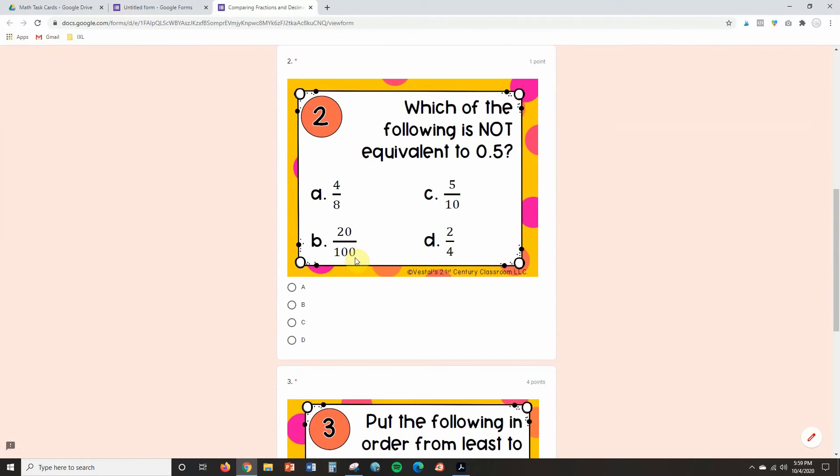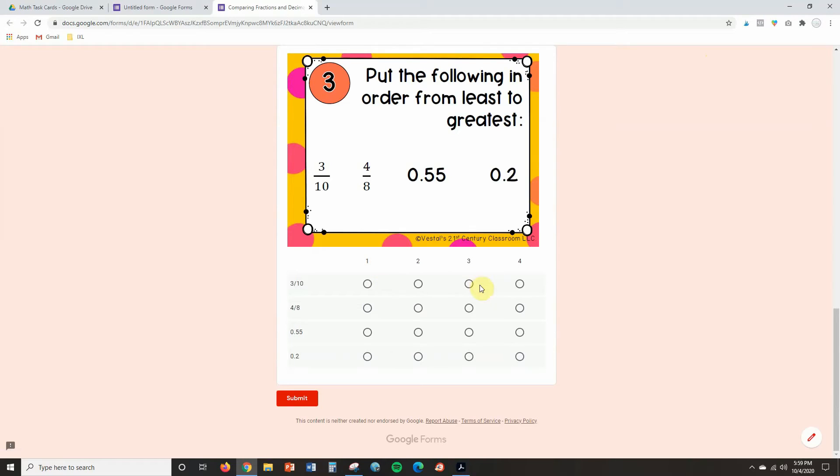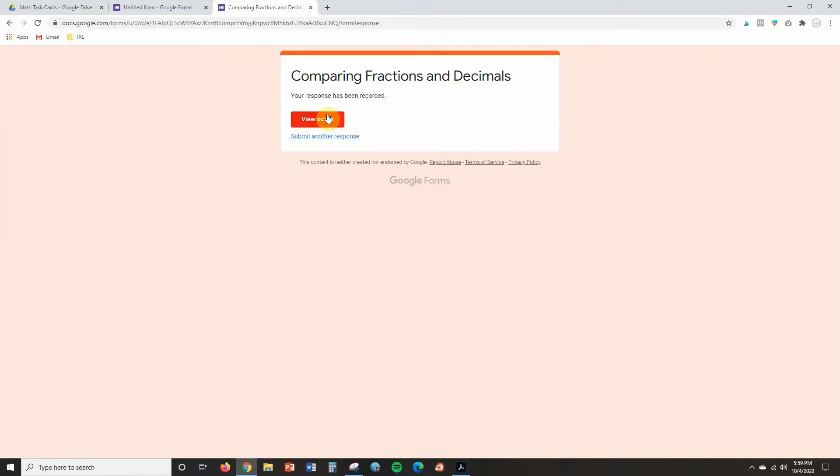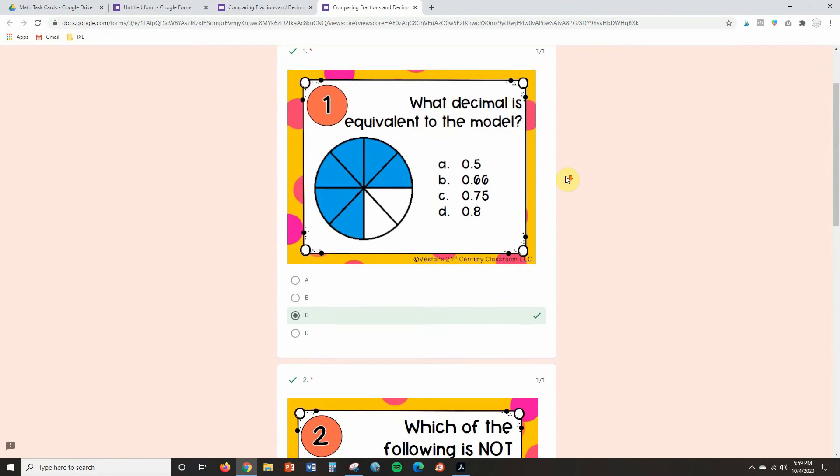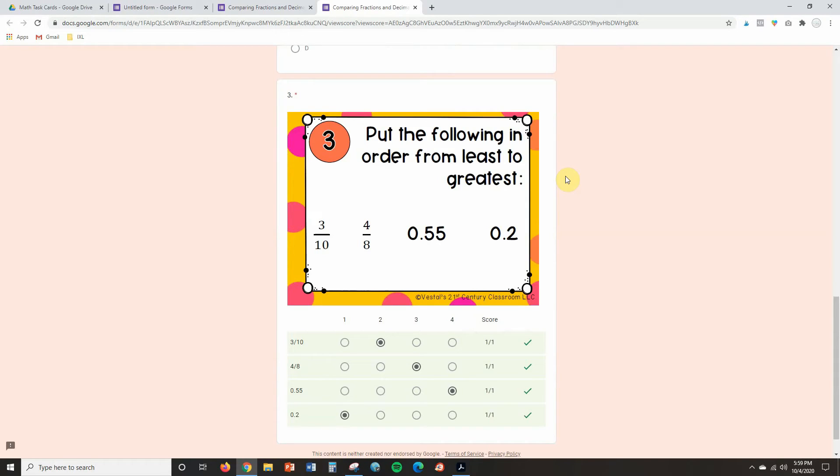I'll hit submit, view score, so I answered all of them correct. I always test everything before I send it to students because I want to make sure that I put all of the answers in correctly. It's very common to put in an incorrect answer by mistake.